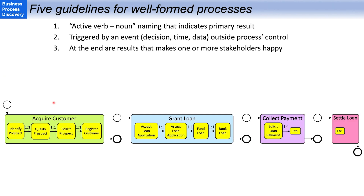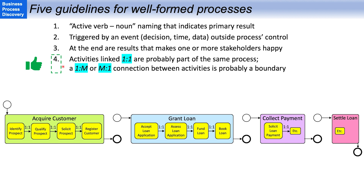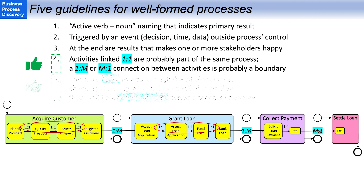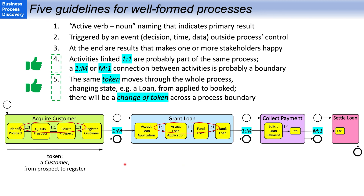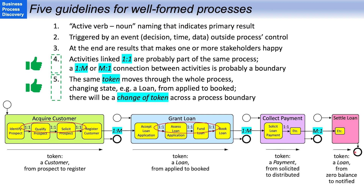So, really great start and high engagement. We're going to close here with five guidelines for well-formed processes. The first three I've already talked about extensively, but I want to stress the last two because they resonate particularly well with business people. The first is the idea that activities linked one-to-one are probably part of the same process, but as soon as we have a one-to-many or many-to-one connection, that is probably a process boundary. The final guideline is that the same token — the customer, the loan, the payment, and the loan again — flows through the entire process changing state, but between processes there will be a change of token. Clear, objective guidelines: science, not just opinion.